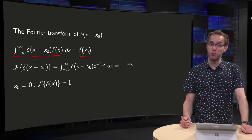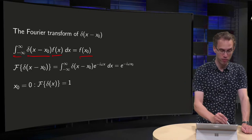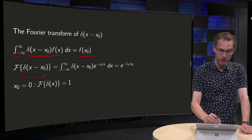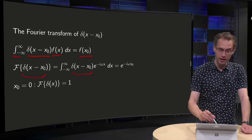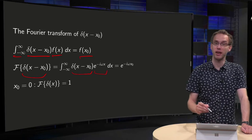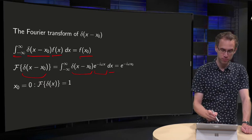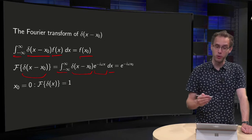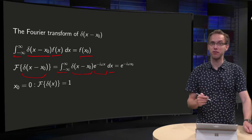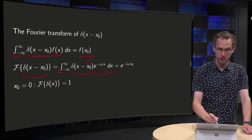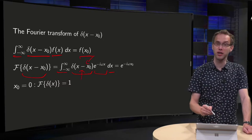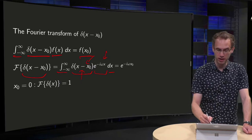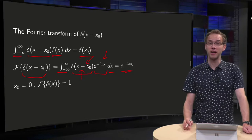What happens if you try to compute the Fourier transform of a delta function? You take your function, add the factor e to the power of minus i omega x, and integrate with respect to x from minus infinity to infinity. The delta function picks out exactly the value where x minus x₀ equals zero, so x equals x₀, and you get e to the power of minus i omega x₀.